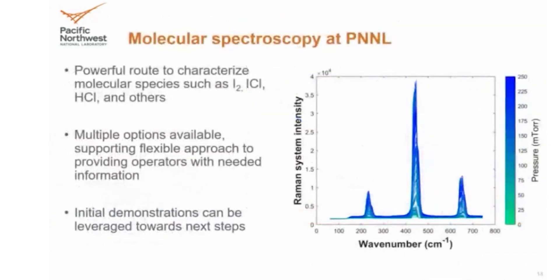Overall, we're showing that online monitoring based on optical spectroscopy for molecular characterization is a powerful route to give us information about the molecular species in the gas phase. There are a lot of ways to provide this type of information — I showed you Raman and FTIR. You can build systems that focus on one, the other, or both. They're both mature and commercially available. Most importantly, with all of this work, we've set ourselves up nicely for the next steps — building that deployment-ready system that operators need to answer their questions about process monitoring.